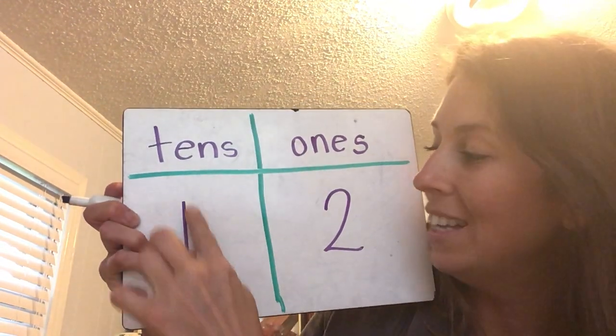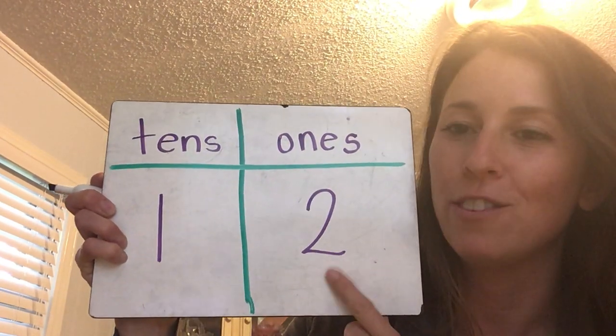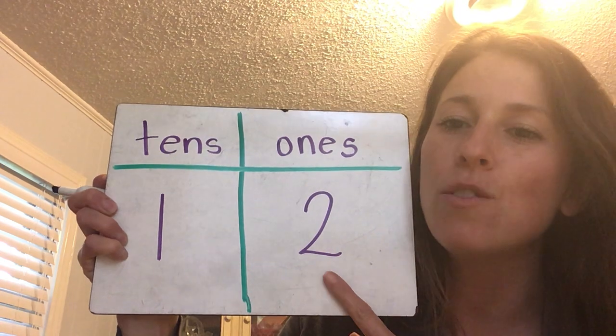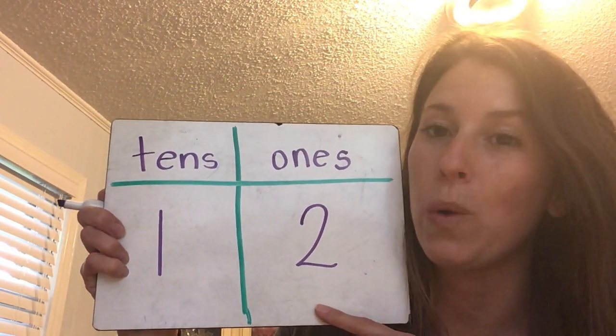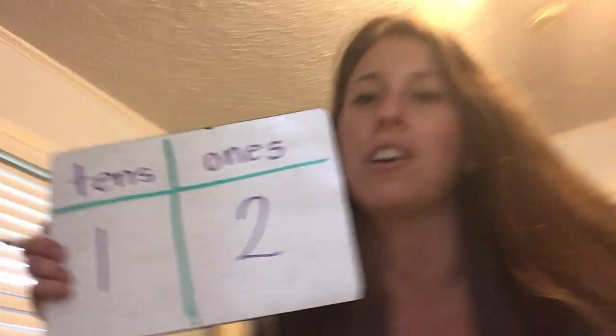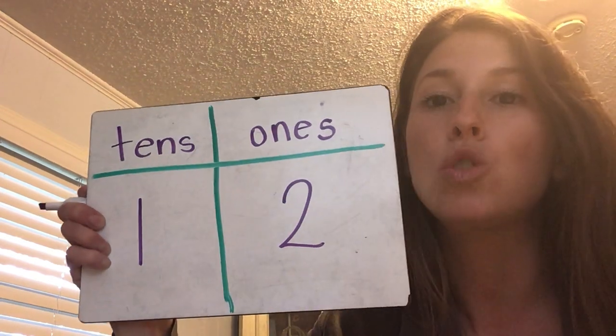Erase. Listen to my next clue. This number has one ten and two ones. What number did we make? Twelve. Twelve has one ten — one group of ten — and two leftover. That makes the number twelve. How many of you said this number was twenty? Sometimes we accidentally say twenty, but the more we practice the more we learn — this is twelve. Say it: twelve.